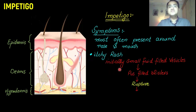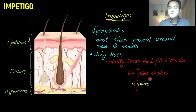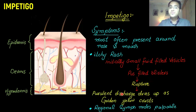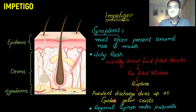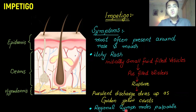Impetigo usually starts as fluid-filled vesicles that become filled with pus, forming pus-filled blisters. These blisters rupture, and the purulent discharge dries up as golden-yellow crusts — the same presentation seen in our case patient. Regional lymph nodes are also palpable due to the infection present in the body.